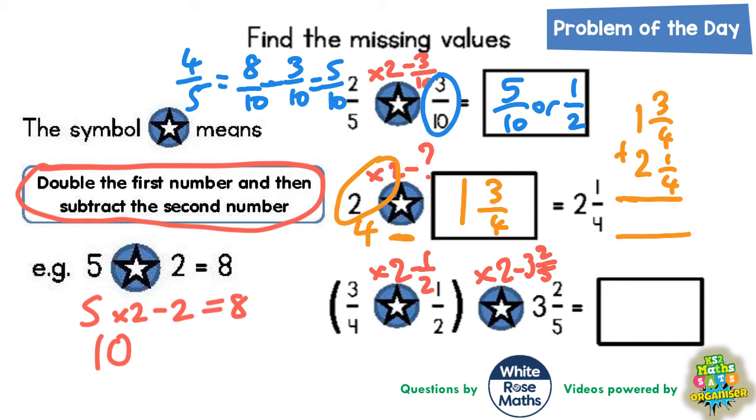Because 3 quarters plus a quarter is 1 whole 1 so that's 4 quarters and 1 plus 2 is 3. And 3 and 4 quarters is like saying 3 plus an extra whole 1 which would be 4 and this is the 4 that we've got here. So the missing number for the second one is 1 whole 1 and 3 quarters.